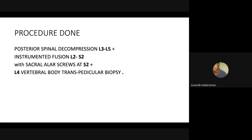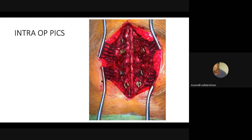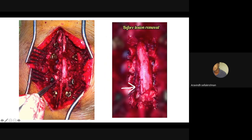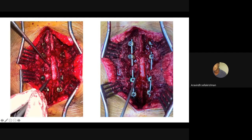The procedure performed was posterior spinal decompression from L3 to L5 level with instrumented fusion from L2 to S2, iliac screw fixation at L2, and transpedicular biopsy at the L4 vertebral level. Intraoperatively, after dissection, a tumor mass was noted at the L4, L3, and L5 levels. The tumor was biopsied, the cord was released from the compressing structures, and biopsy was taken from the L4 vertebral body level.